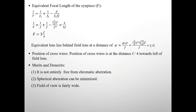So this is the theory. Now we will see the equivalent focal length of the eyepiece F. So 1/F = 1/F1 + 1/F2 − D/(F1·F2). Since F1 and F2 are each equal to F, and D = 2/3F, with F1·F2 = F², this gives 1/F = 4/(3F), so the equivalent focal length F = 3F/4. The equivalent lens lies behind the field lens at a distance α = D·F_eq/F = (2/3F)·(3/4F)/F = F/4.